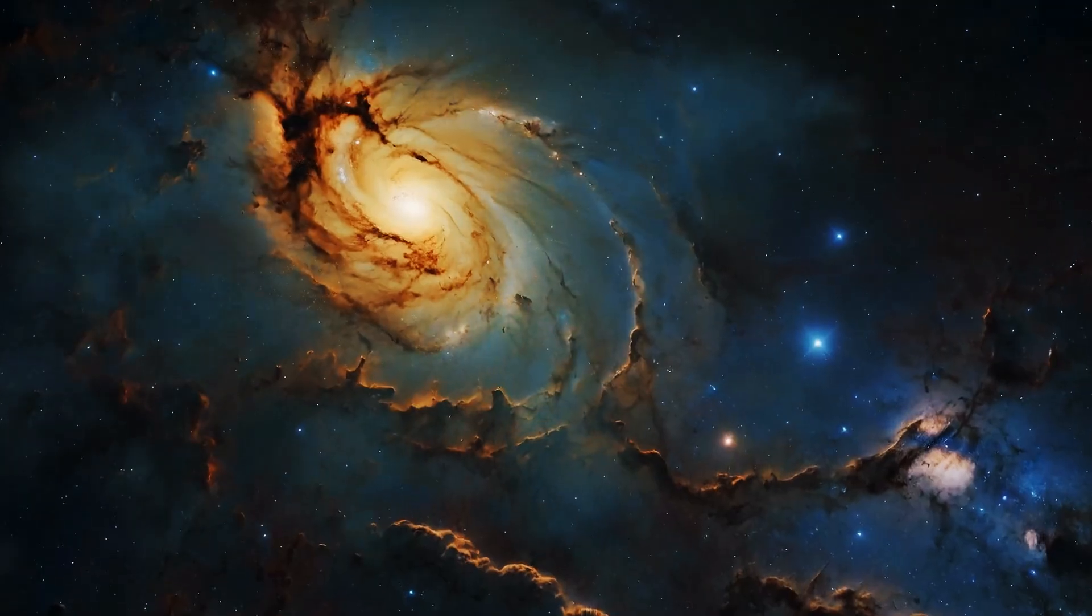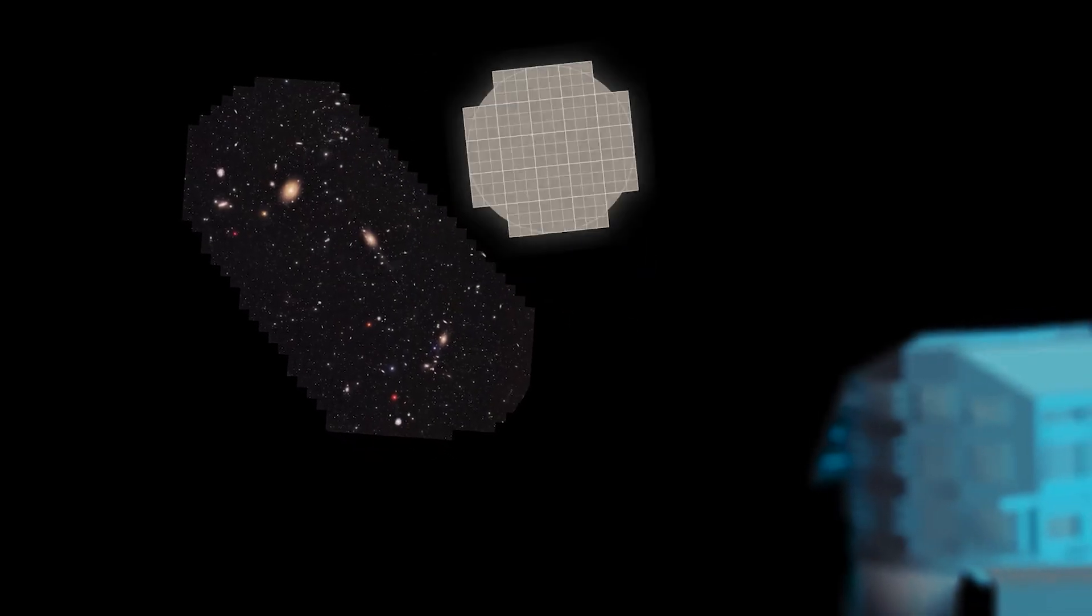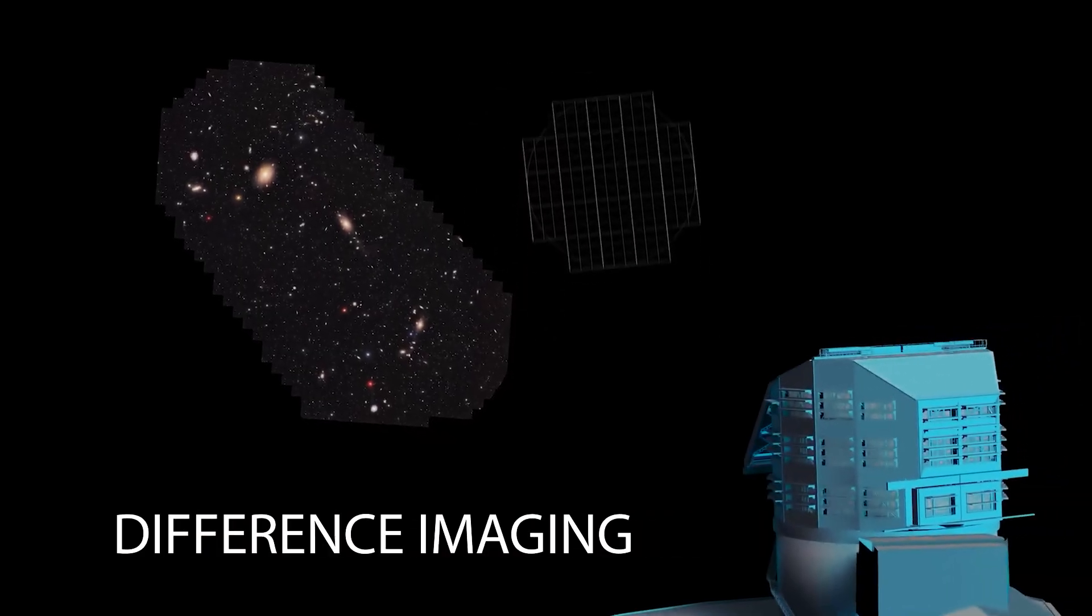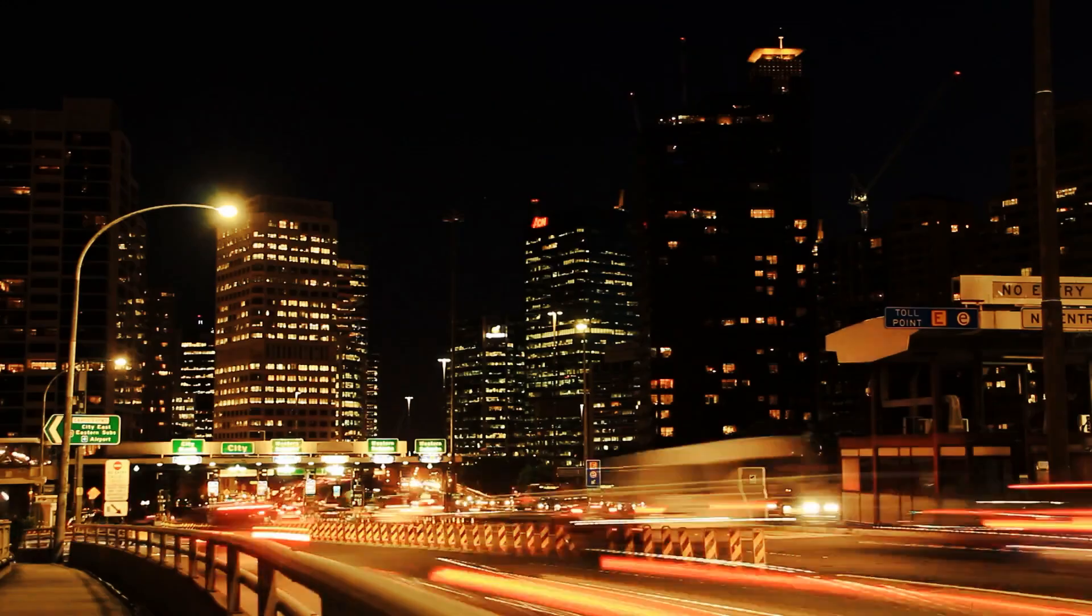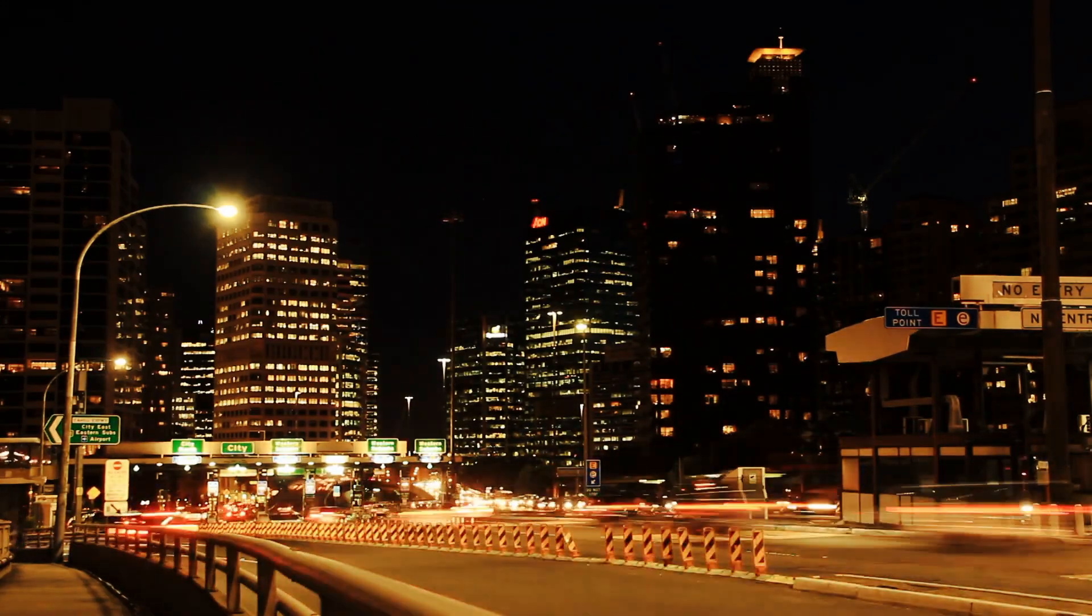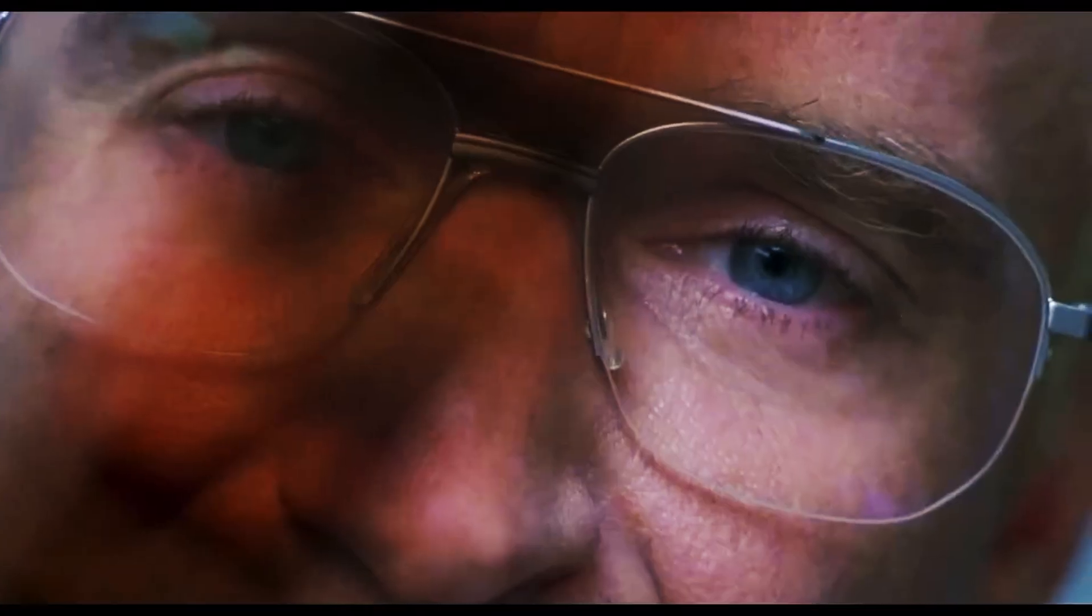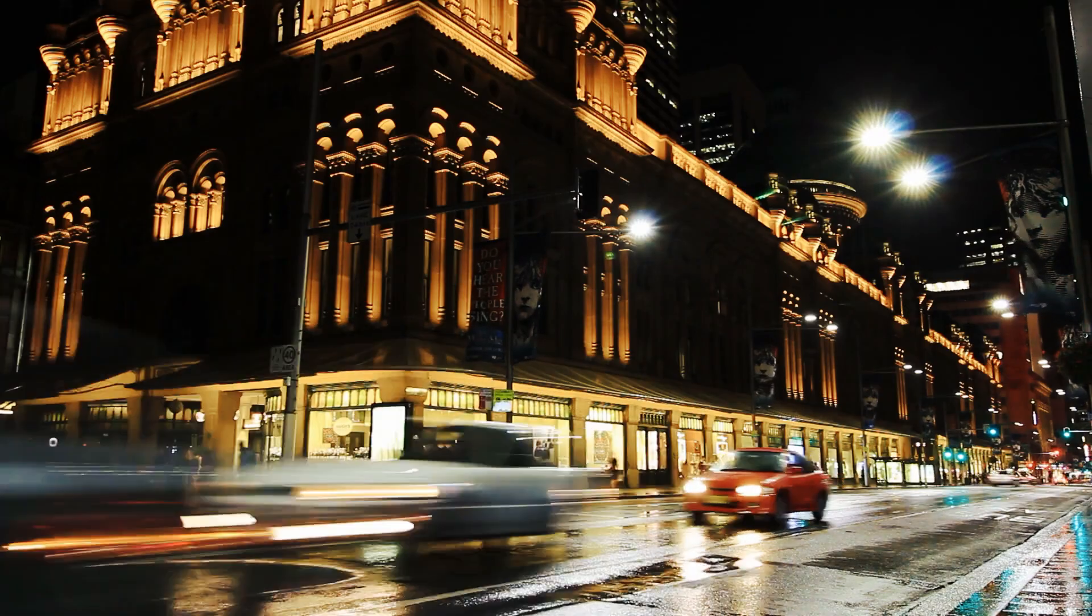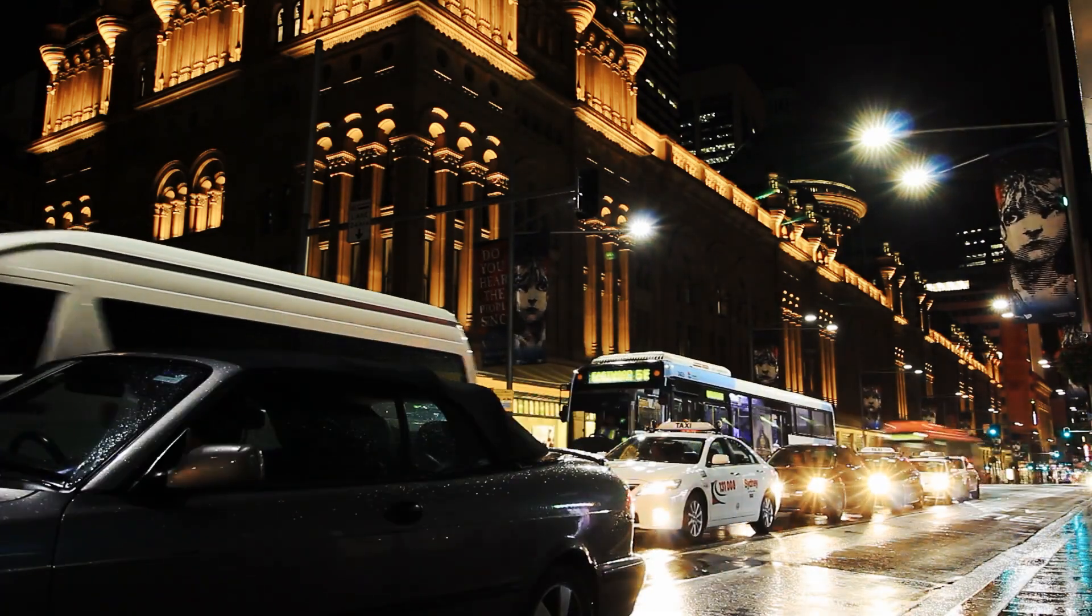The real magic is what this cadence allows us to do. The observatory's primary technique is something called difference imaging. Imagine you take a picture of a city street at night. An hour later, you take the exact same picture. If you digitally subtract the first image from the second, what's left? Only the things that have changed. A car that moved. A light that turned on. A person walking.